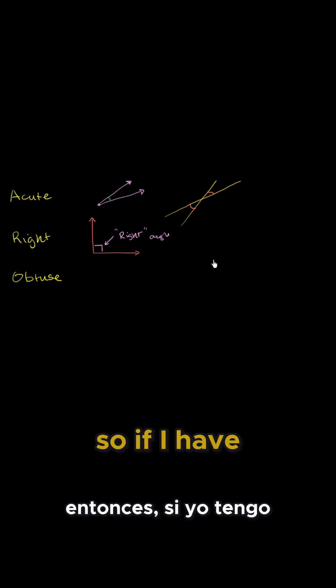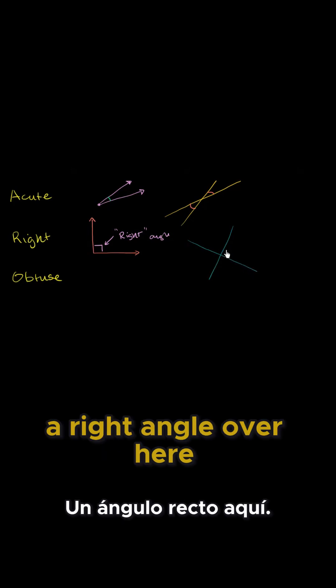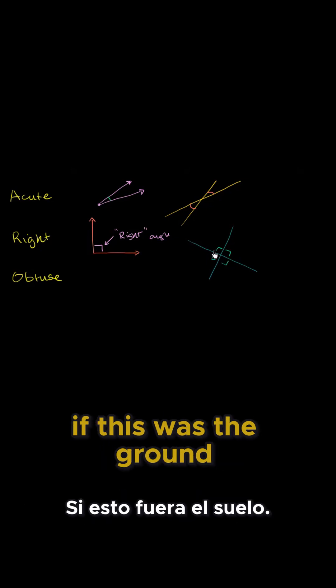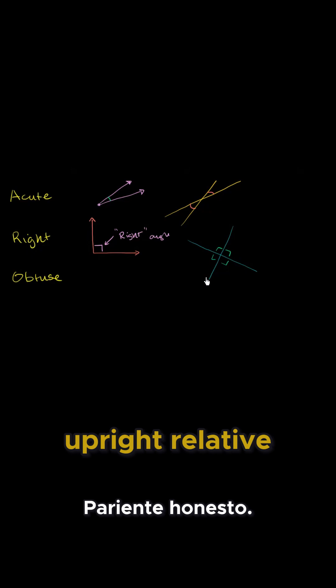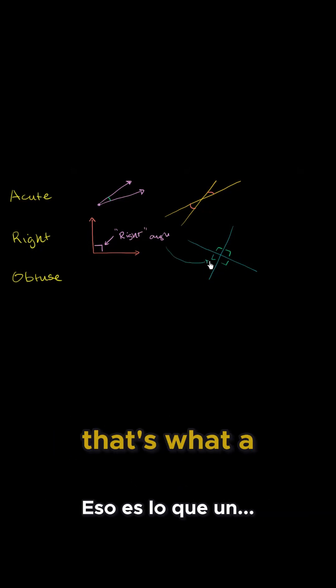And let me draw it with some lines. So if I have one line like this, and then I have another line like that, a right angle over here—actually all of these would have to be right angles. It would mean that this line is completely, if this was the ground, this line is completely upright relative to this line over here. So that's what a right angle means.